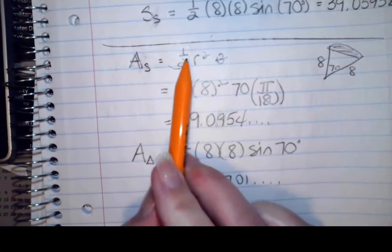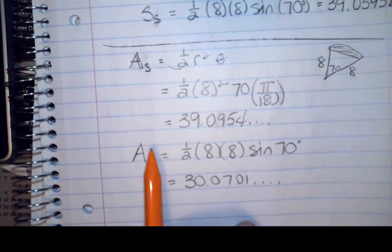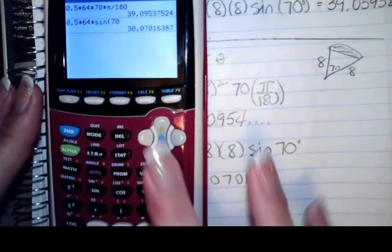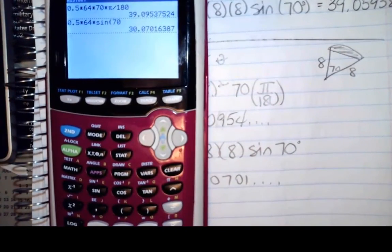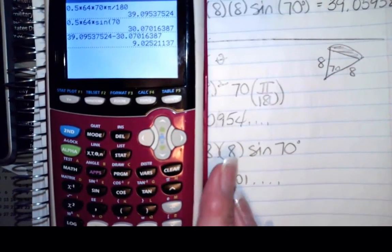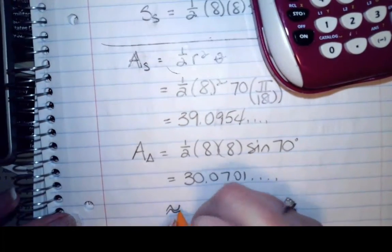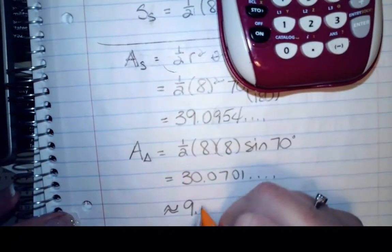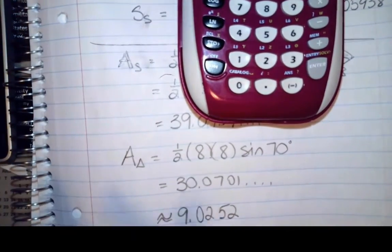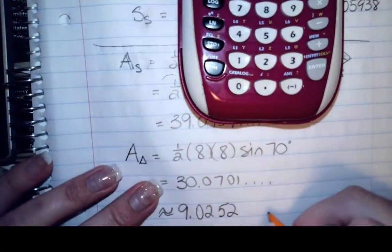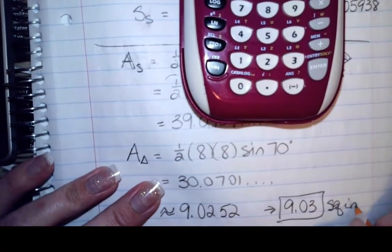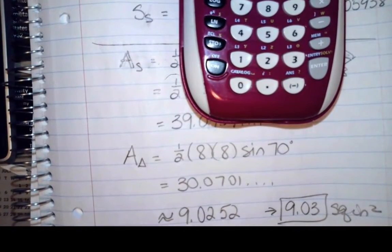So if I take the area of the entire pie shape and subtract off just this triangle, I'll be left with the shaded region. Entering this one minus this one, I get an answer of 9.0252. So my area is approximately 9.0252, and rounding to two decimal places, I get 9.03 square inches.